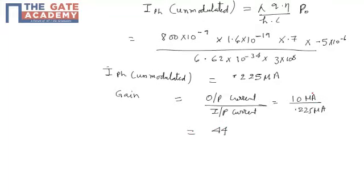Unit will be nothing because it will cancel. So, gain has no unit. My value is 44.